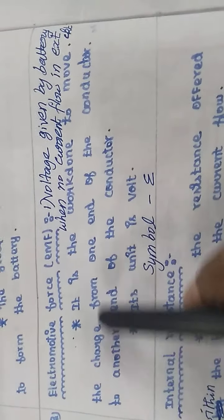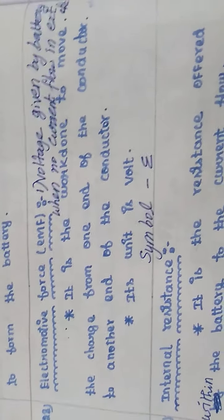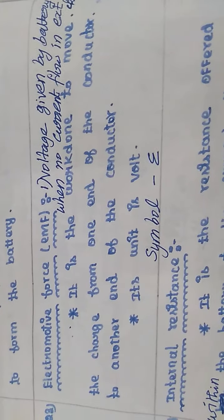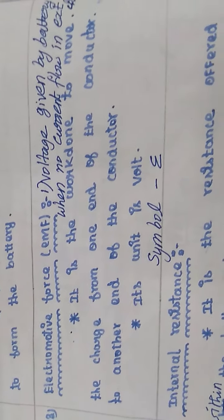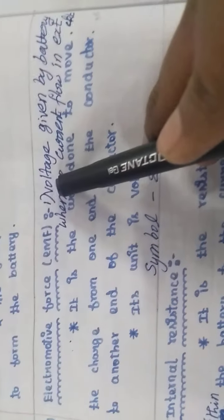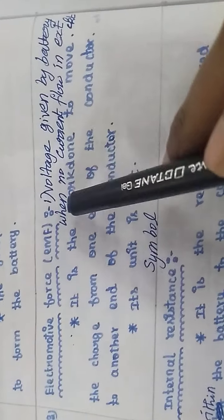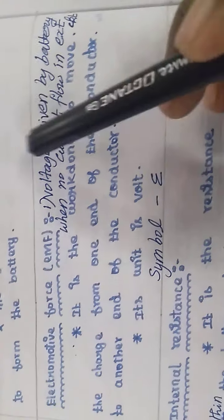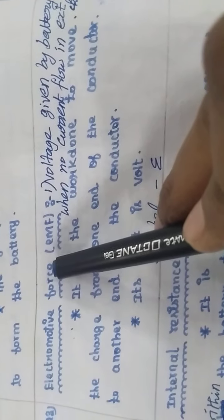Voltage is defined as the work done to move a unit charge from one end of the conductor to the other end. We take a particular charge and move it from one position to another — this work done is what we call voltage. The voltage that the battery provides when current flows through the external circuit is the electromotive force, and its unit is the volt.